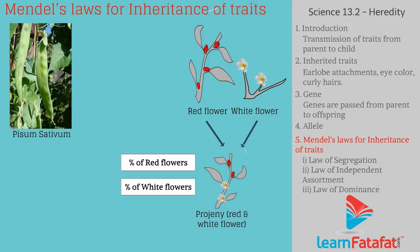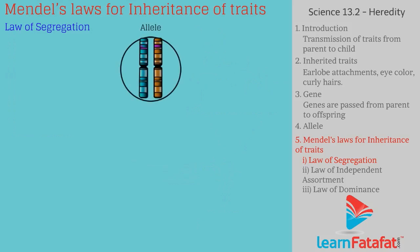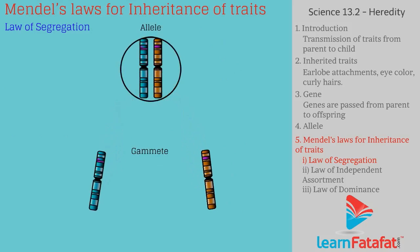Based on his research, he formulated three laws. The first is the Law of Segregation. It states that during the formation of gametes, the alleles for each gene separate from each other such that each gamete carries one allele for each gene.